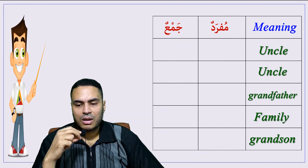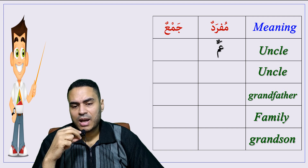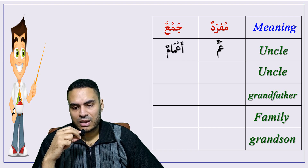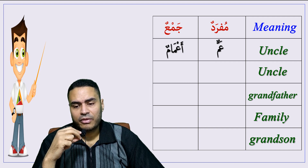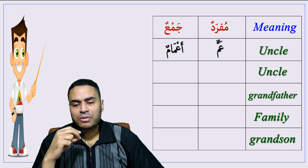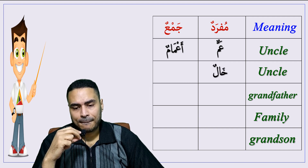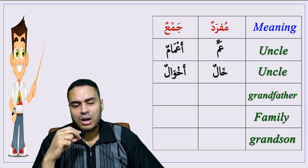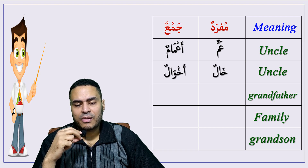Uncle — 'ammun, plural: a'mam. This uncle — 'amm — is from the father's side. From the mother's side we call him khal, plural: akhwal.